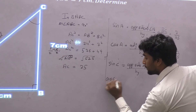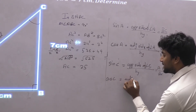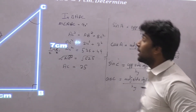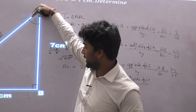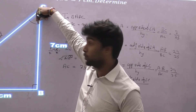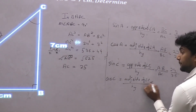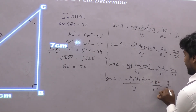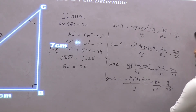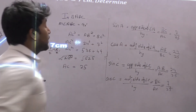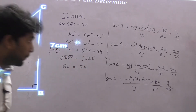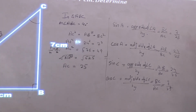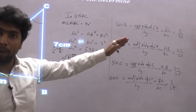Now what is cos C? It's the adjacent side of angle C upon hypotenuse. Angle C has two adjacent sides: AC and BC. Since AC is the hypotenuse, I take BC upon AC. BC's value is 7, AC's value is 25, so cos C equals 7 upon 25. To summarize: sin A — opposite side of angle A upon hypotenuse — BC upon AC — 7 upon 25. Cos A — adjacent side of angle A upon hypotenuse — AB upon AC — 24 upon 25.